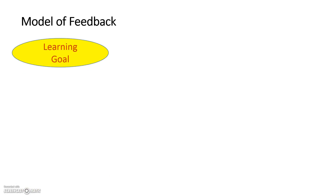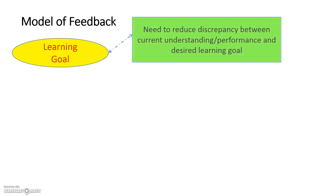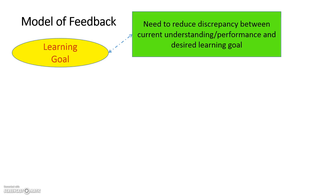How does a feedback model work? You always have a learning goal — in the context of projects, it's to get the project done well. What this involves is a need to reduce the discrepancy between where one is now, perhaps starting the product or as the product moves through its development, and eventually meeting the competencies and achieving the desired goal.